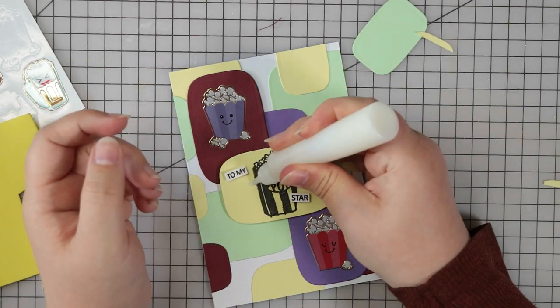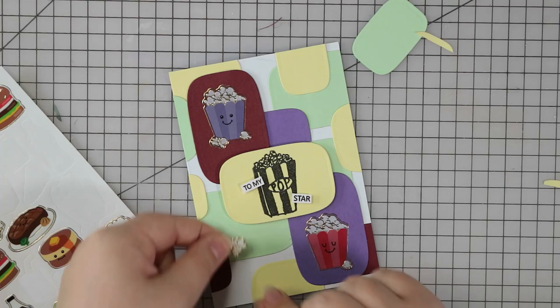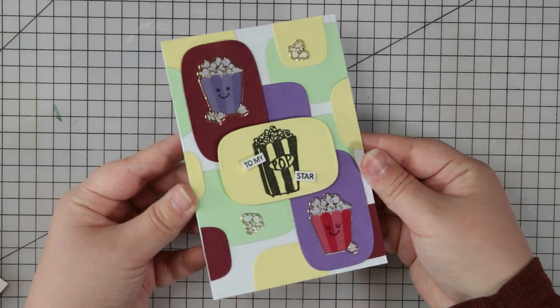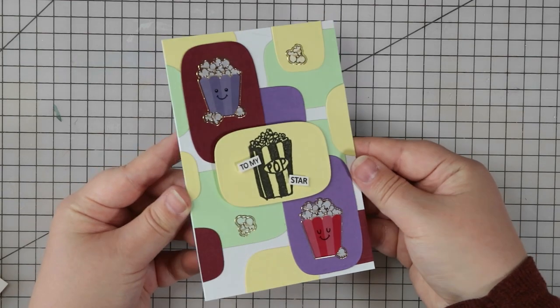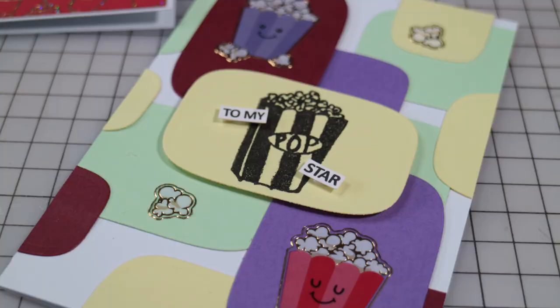I think this would be great for somebody who likes popcorn but also great for somebody who's into music because it's a fun little pun. I do like a pun, big fan of puns. So that is card number five, really like this one, I think it was really cute. And that's all the cards for this video, so let's just have a little recap of all the cards that we made.